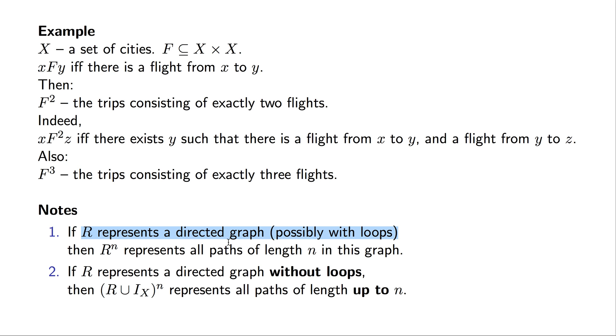And again, if R describes this directed graph with loops, then R^n represents the paths of length n in the graph.